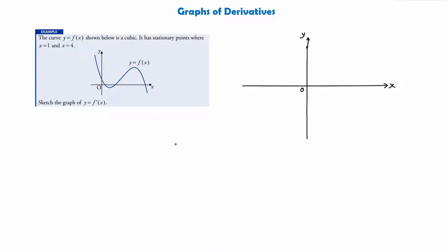Let's do a worked example of the type of question you'd see in an exam. We have the curve y equals f of x shown below — it's a cubic with stationary points where x equals 1 and x equals 4. We are asked to sketch the graph of y equals f dashed x. If you forget that a cubic goes to a quadratic, remember: cubic means something to the power of 3, and quadratics look like a U-shape.